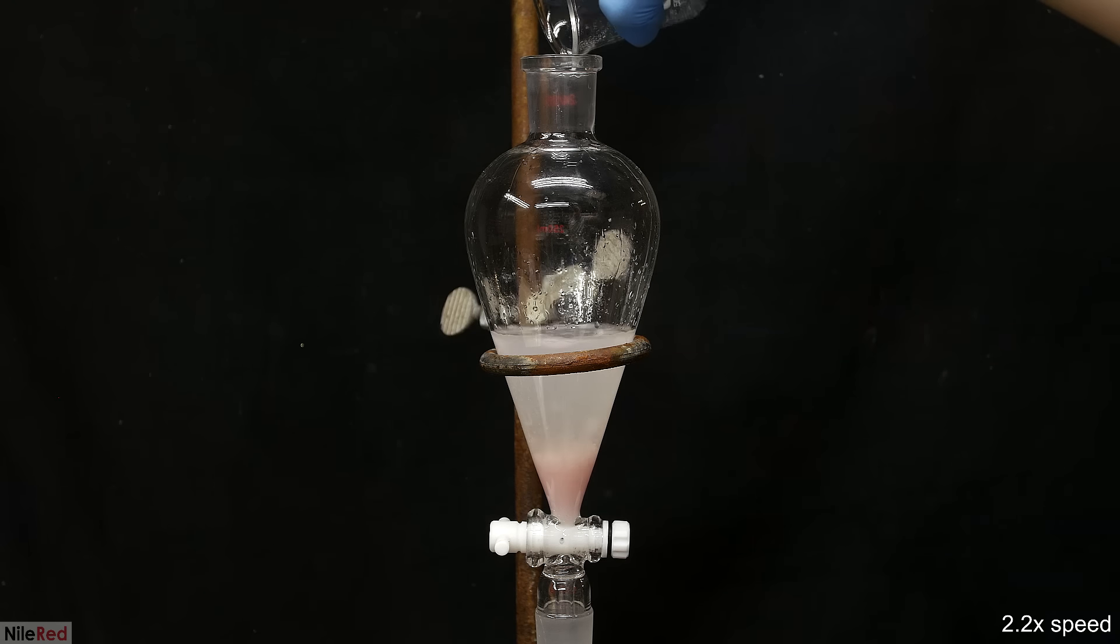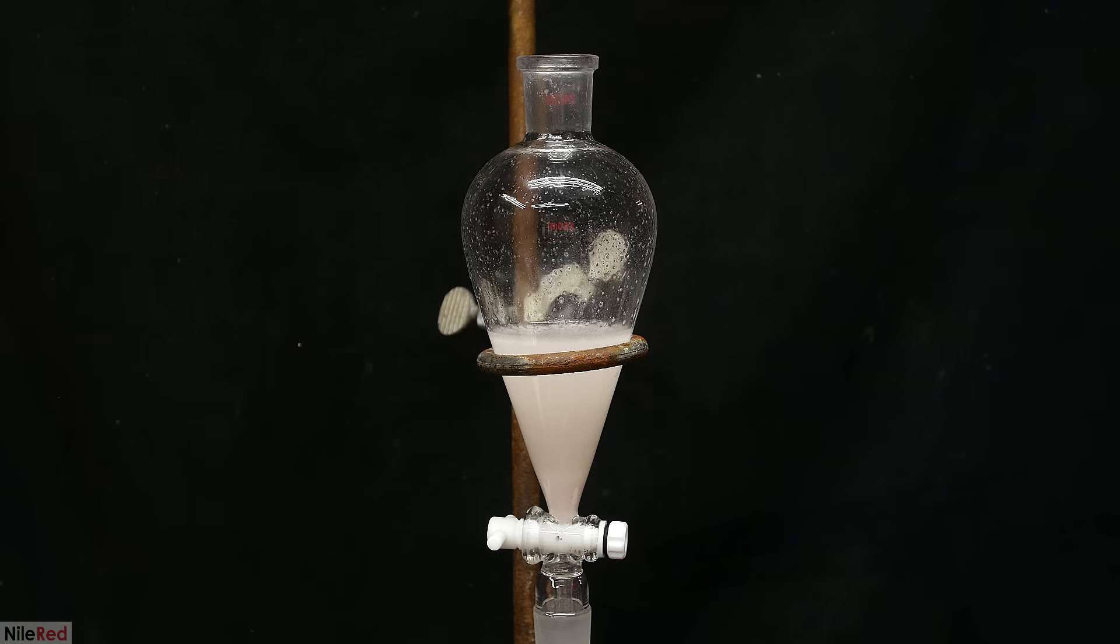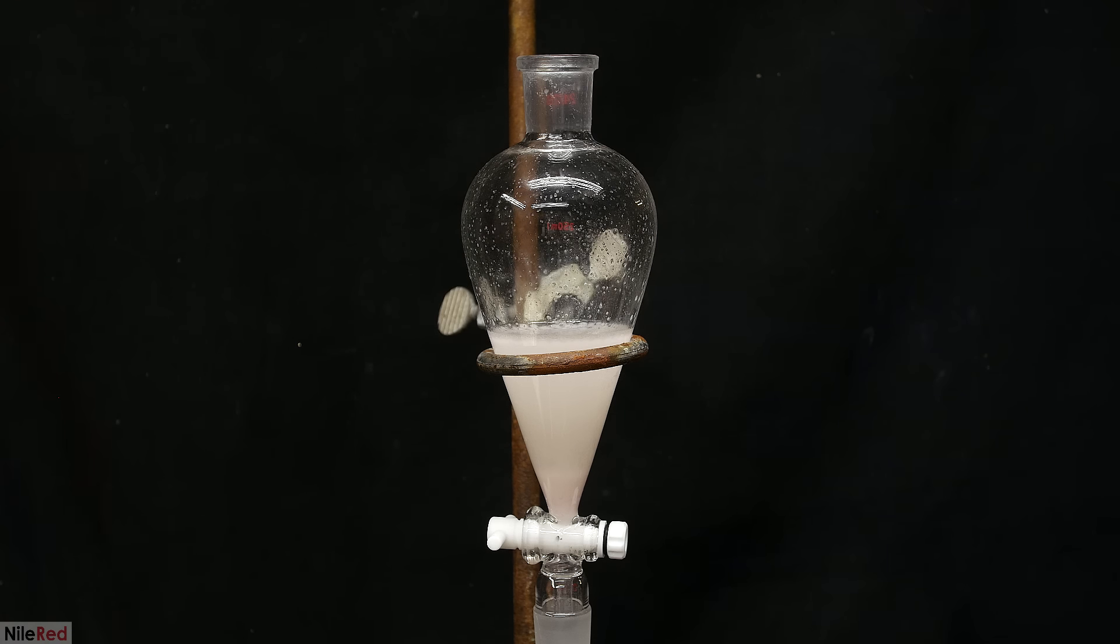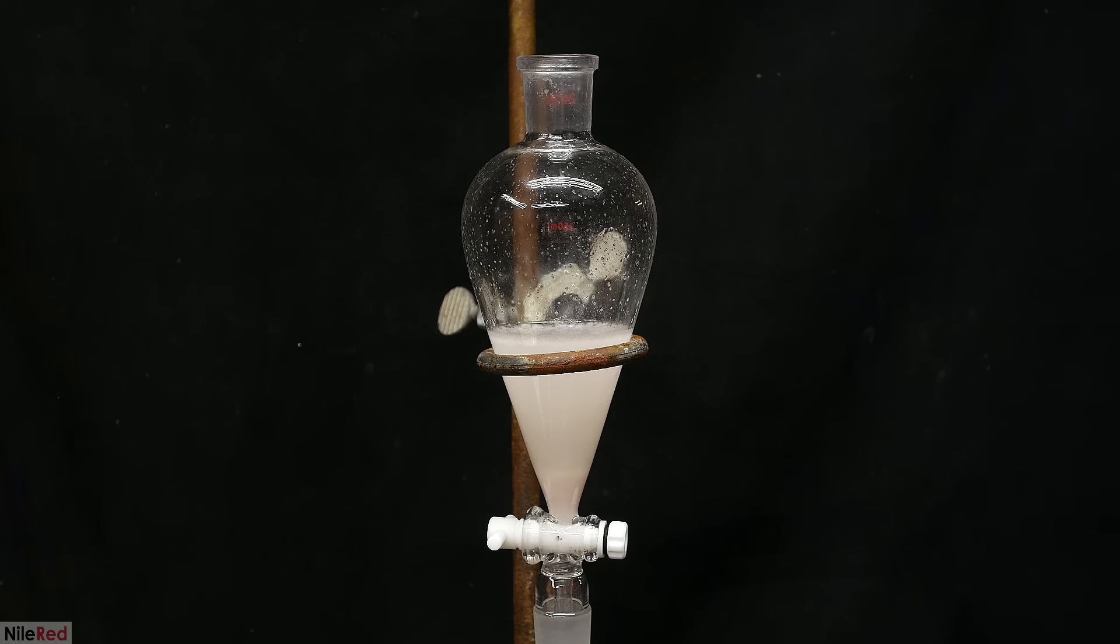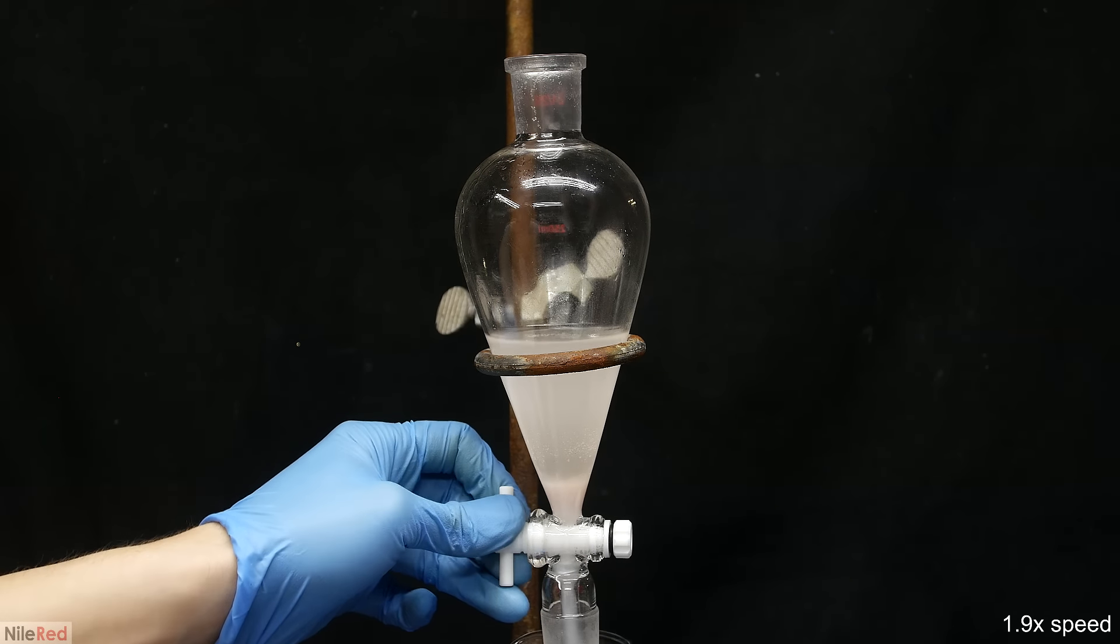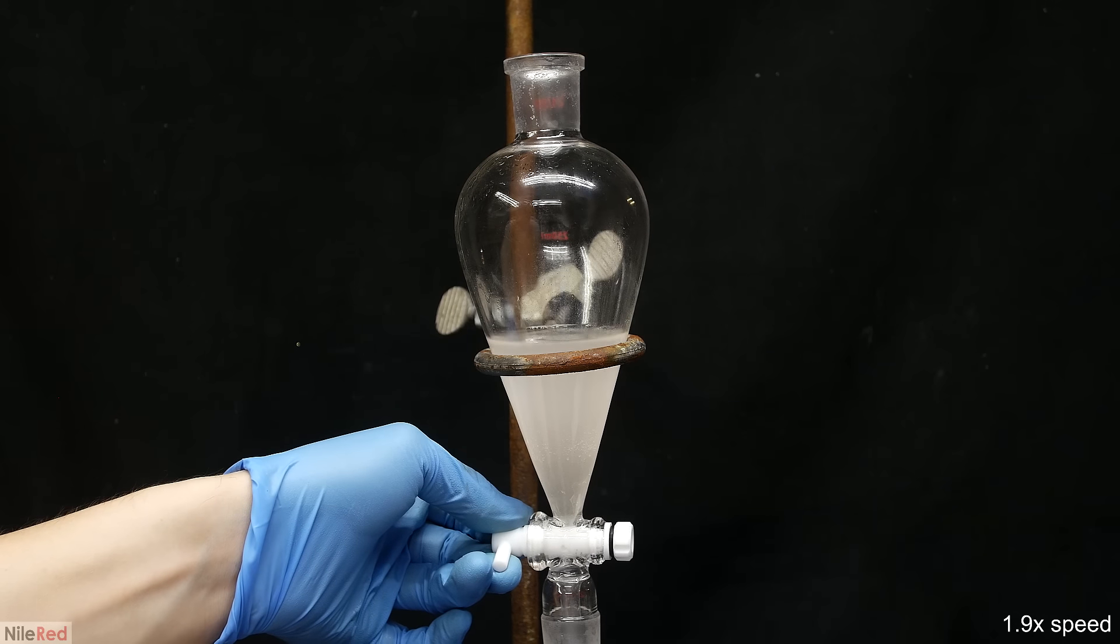To get rid of any acid that might remain, I wash it with some saturated sodium bicarbonate solution. To really mix it up, I cap the funnel, shake it, and vent it, but I have to be really careful because a lot of CO2 is being generated. I wait for about 30 minutes for the layers to separate, then I drain off the lower one, and I repeat this same washing one last time.